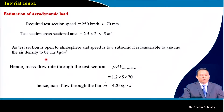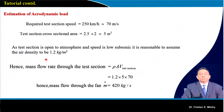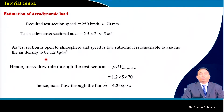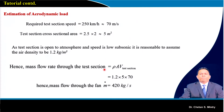The required test section speed is 250 km/h, which is roughly 70 m/s. The test section dimension is 2.5 m × 2 m, giving an area of 5 m². The mass flow rate is given by density × area × axial velocity, yielding 420 kg/s. This is on the higher side compared to what we have discussed up to now — we are handling a large mass flow rate of 420 kg/s.